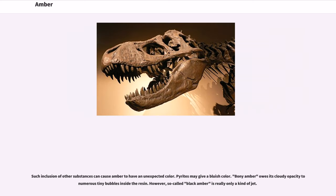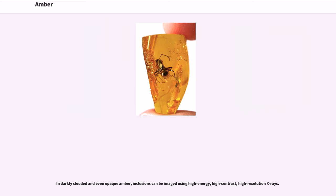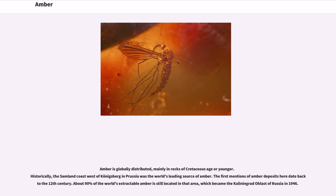Such inclusion of other substances can cause amber to have an unexpected color. Pyrites may give a bluish color. Bony amber owes its cloudy opacity to numerous tiny bubbles inside the resin. However, so-called black amber is really only a kind of jet. In darkly clouded and even opaque amber, inclusions can be imaged using high energy, high contrast, high resolution X-rays.